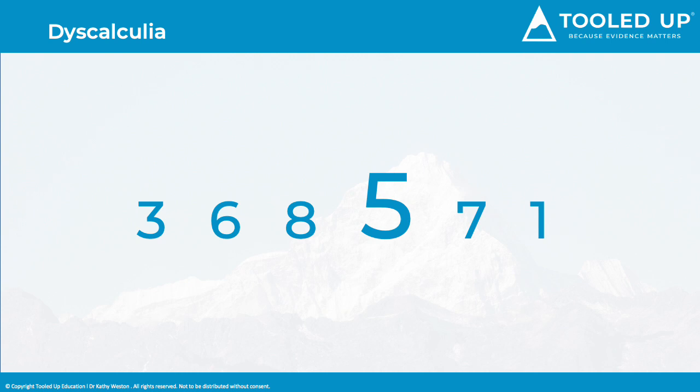For example, can the pupil explain the link between addition and subtraction and the link between multiplication and division? If multiplication is just a string of numbers 3, 6, 9, 12, that doesn't help with the understanding of division.